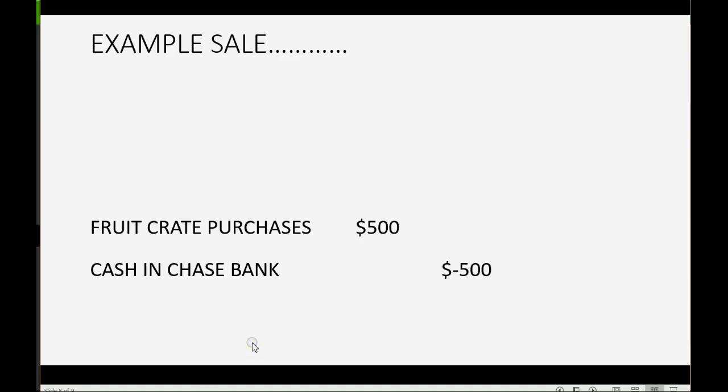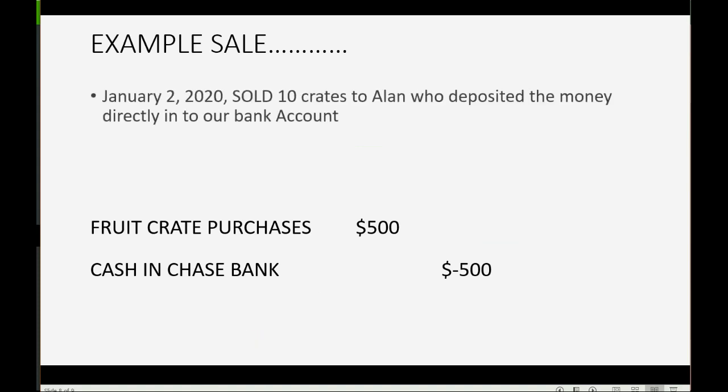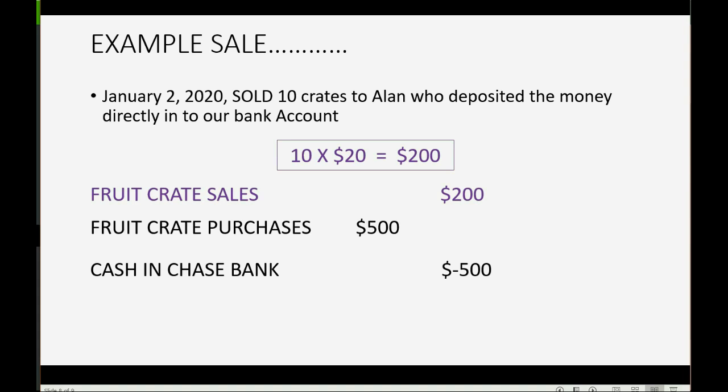It won't be too negative for long, because now I will show you the example sale. Let's imagine on January 2nd of 2020 we sold 10 crates to Allen, who deposited the money from the sale directly into our bank account. We know we're selling 10 at $20 each, so 10 times 20 equals $200. That means the income account Fruit Crate Sales will show up for the first time as $200, and Cash and Bank will be $200 less negative — we'll only owe the bank $300.